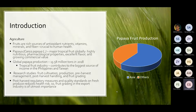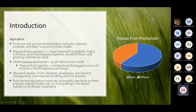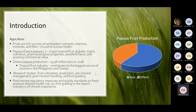Fruits are considered a high or rich source of antioxidant nutrients, vitamins, minerals, and fiber, and it is crucial to human health. Papaya is a major tropical fruit globally. It is highly nutritious, has pharmacological properties, excellent flavor, and has a growing commercial value. In fact, there is about 13.58 million tons of papaya production globally in 2018, in which about 60% comes from Asia and the rest from other regions. The tropical fruit industry has also contributed the biggest source of income in the Philippines and Taiwan.